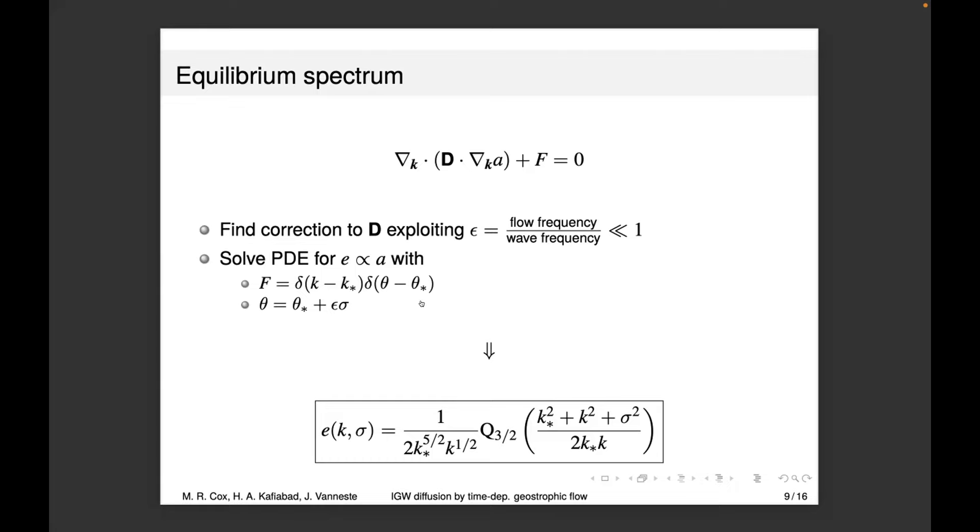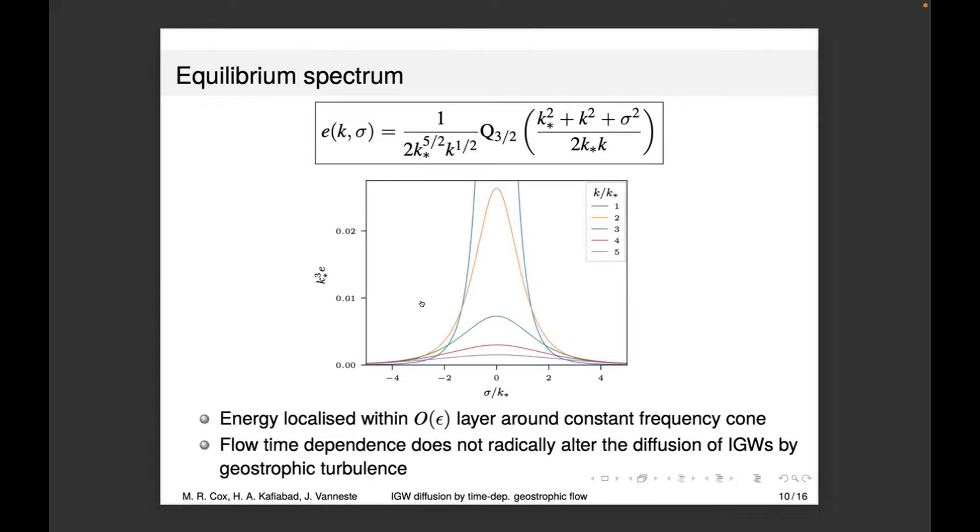It turns out we do have an exact solution. Q here is the Legendre function of the second kind. I've plotted it so you can see what it looks like. The vertical axis is energy scaled by the forcing wave number, and the horizontal axis is the rescaled angle, also scaled by the forcing wave number. This is on the cone—moving away in sigma means moving away from the cone. The energy distribution is incredibly localized to the cone with decay away from it. As you move along the cone in k, you get decreased energy, as expected. We can conclude that energy is localized within an order epsilon layer around the constant frequency cone, and flow time dependence doesn't radically alter this diffusion regime.